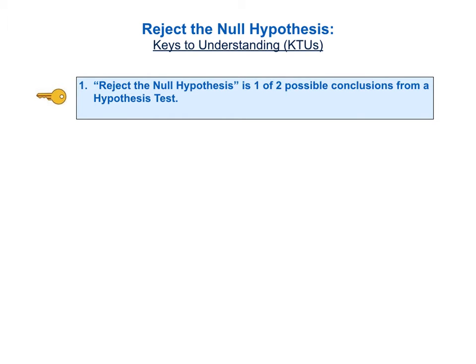As usual, in the book and in these videos, we will start out with a list of keys to understanding, or KTUs, so that you can see on one page the most important things to understand about the concept. In this video, there are four keys to understanding for the concept of reject the null hypothesis. Let's go through the list fairly quickly, and then follow that with a detailed explanation of each key.